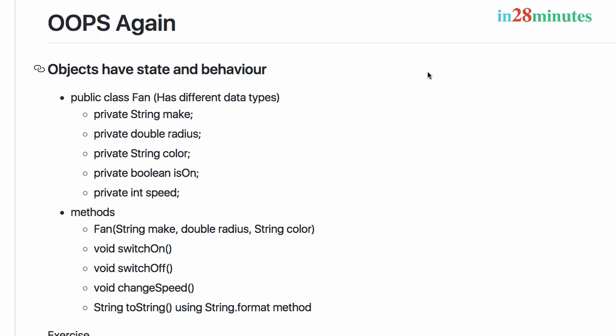Welcome to this section on object-oriented programming. In the previous section we understood that objects have state and behavior. However, all the objects we had created until now had really simple state — either a couple of variables representing the state or a few methods representing behavior. In this section we will take it one step further, creating a lot more variables representing state and thinking about what methods you can create to represent behavior.